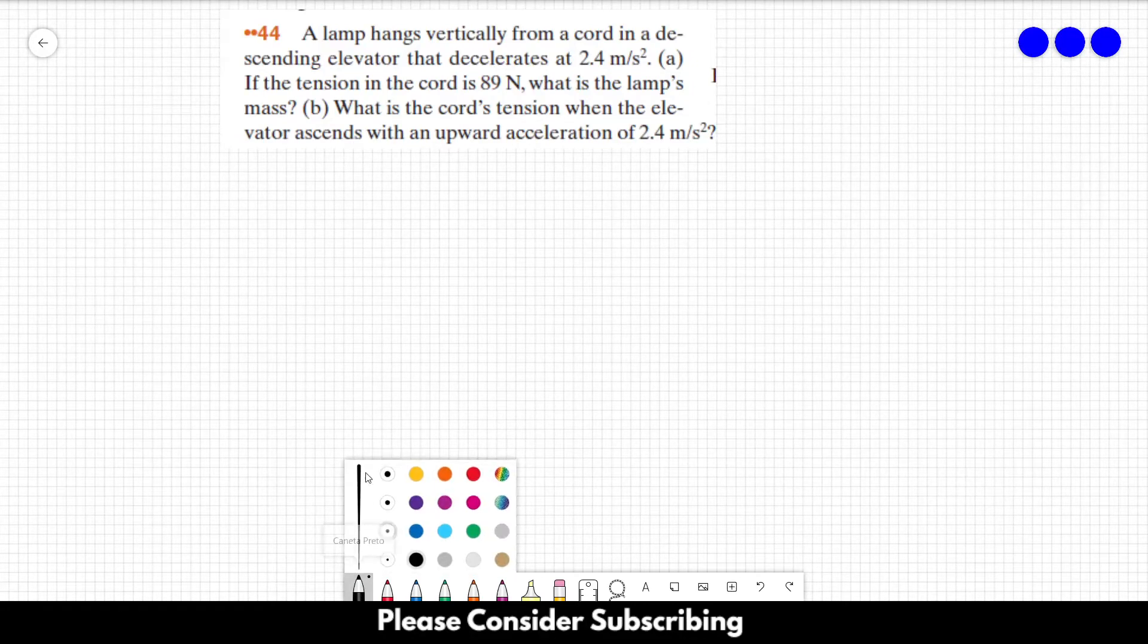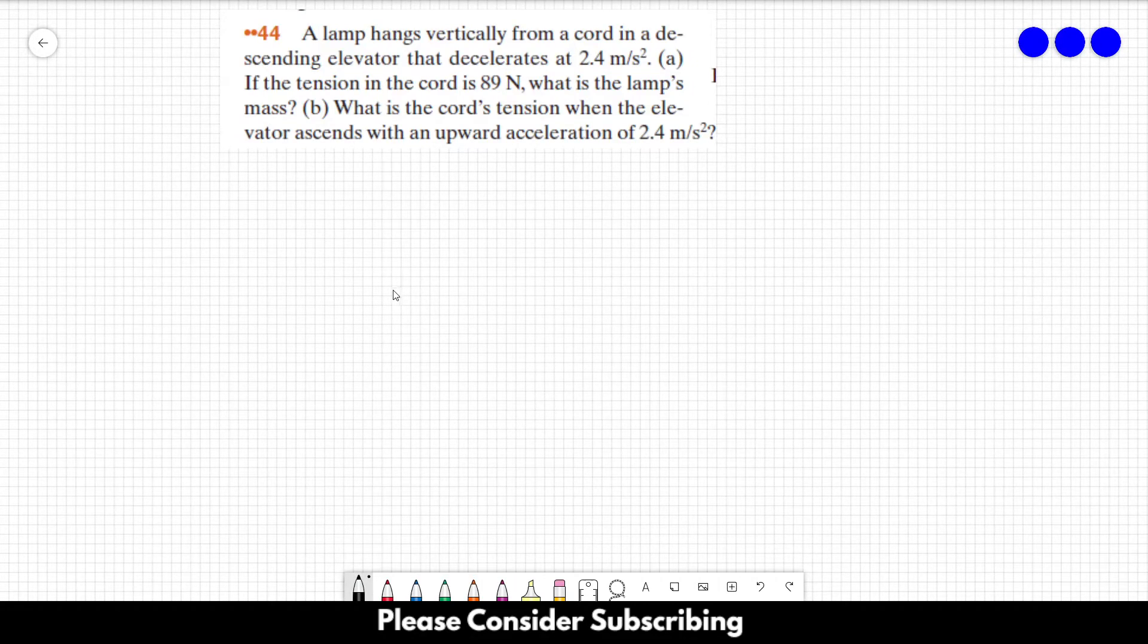Number 44, a lamp hangs vertically from a cord in a descending elevator that decelerates at 2.4 meters per square second. Letter A, if the tension in the cord is 89 newtons, what is the lamp's mass? Letter B, what is the cord's tension when the elevator ascends with an upward acceleration of 2.4 meters per square second?